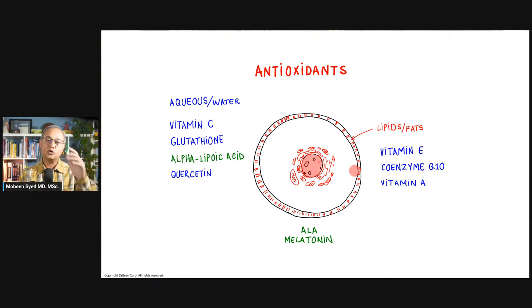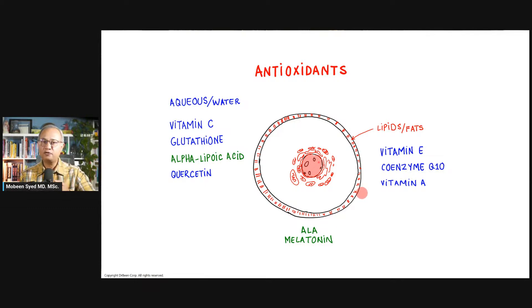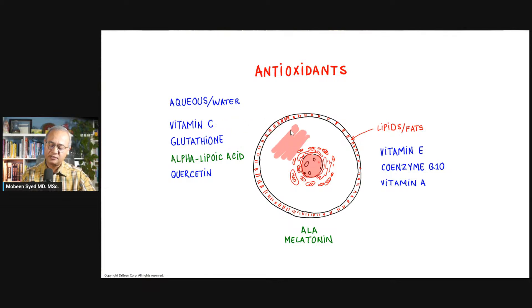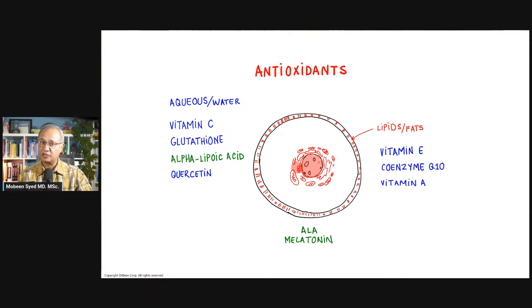Here is the important point of this talk: when you administer antioxidants to take care of reactive species, you have to administer water-soluble antioxidants for the aqueous environment. Vitamin C, for example, is an antioxidant and it is water-soluble. Vitamin C will enter the cell in its aqueous environment and take care of the oxidations and reactive oxygen species that are going on inside the watery areas of the cell. Glutathione is another that would take care of reactive oxygen species within the aqueous environment.